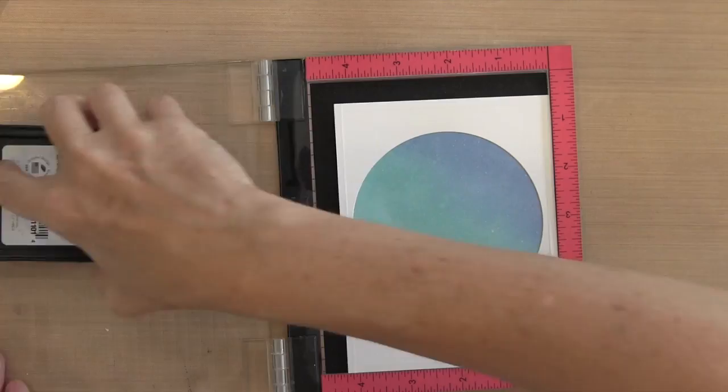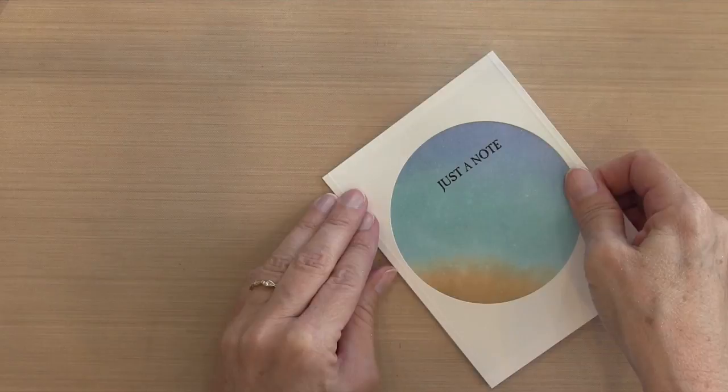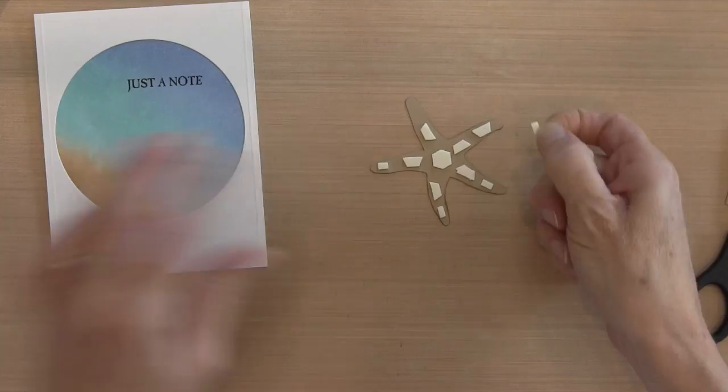Then I'm going to adhere this panel to a card base, just my regular A2 size. I used some Stampin' Up dimensionals, which I cut in different size pieces to pop up the starfish. I'm going to take the release backing off and just put it right there so that it's off the circle.